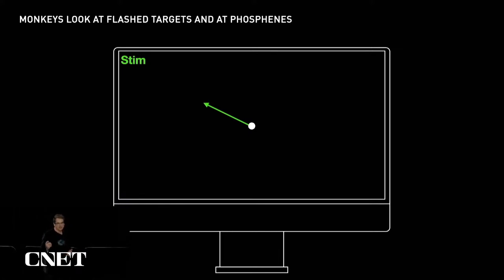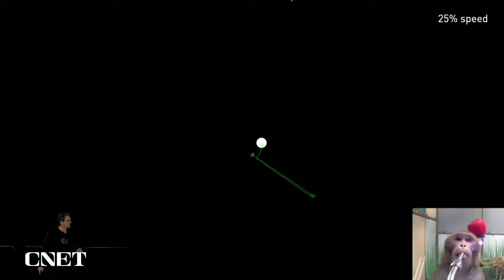Let's look at Code performing this task. I want to show you first, at one-quarter speed, there's a visual flash and he makes an eye movement towards it. The monkey can only see what is white on this screen. He can't see his own eye movement, and he certainly can't see when we stimulate.